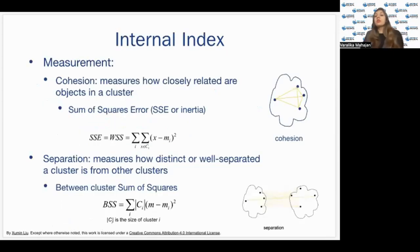Okay, so this was about external index when we know the ground truth. What about when we don't know the ground truth? Then we use internal index. How is that calculated? Based on two parameters, cohesion and separation. Cohesion is basically the measure of how closely objects are related in a cluster. Now, for this, we use sum of squares error, SSE, which is calculated by the formula given below. And for separation, which is the measure of how distinct or well-separated different clusters are from the other, we calculate the between cluster sum of squares using the formula given here, where C is the size of cluster I.